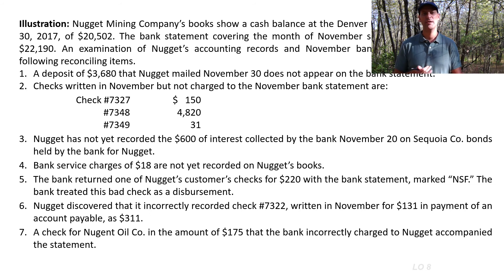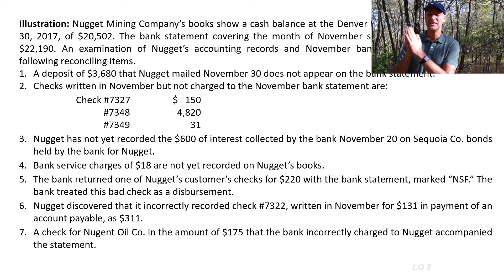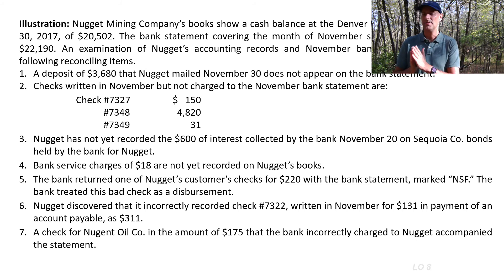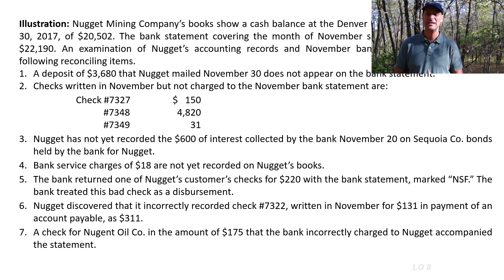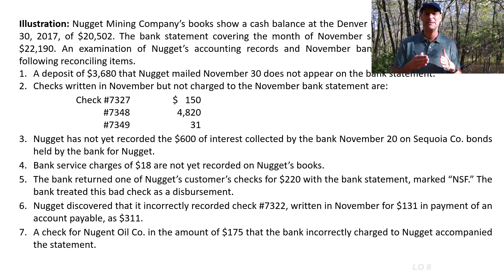Next, checks written in November have not been charged to the November bank statement — these are outstanding checks. The company wrote the checks; they're outstanding and represent cash the company does not have even though they haven't been cashed yet. They are payable on demand, so they should be a reduction in cash. Outstanding checks are reconciled to the bank balance. The three outstanding checks are for $150, $4,820, and $31, which sum to $5,001.